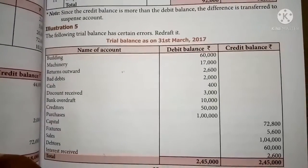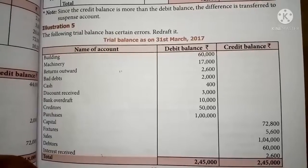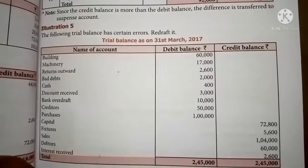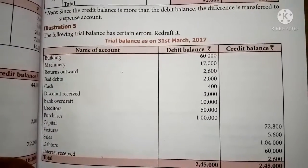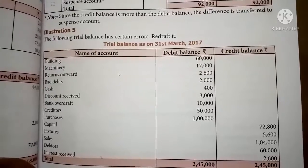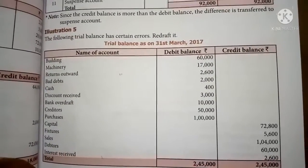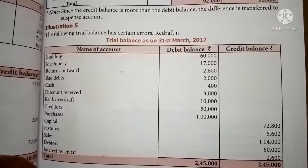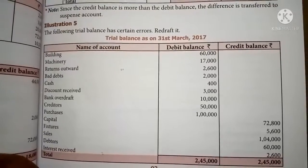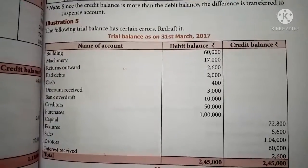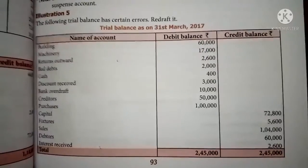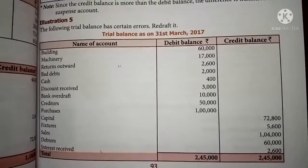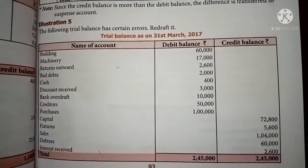While redrafting the trial balance, write this 2,600 purchase returns — return outwards — in the credit column. Bad debts, 2,000 — it is one of the losses, so it is correctly written in the debit column. Cash is property, debit column — also correctly written. Discount received is one of the income — it should be shown in the credit column as all revenue should be shown on the credit column, but it is written in the debit column, so write it in the credit column — 3,000.